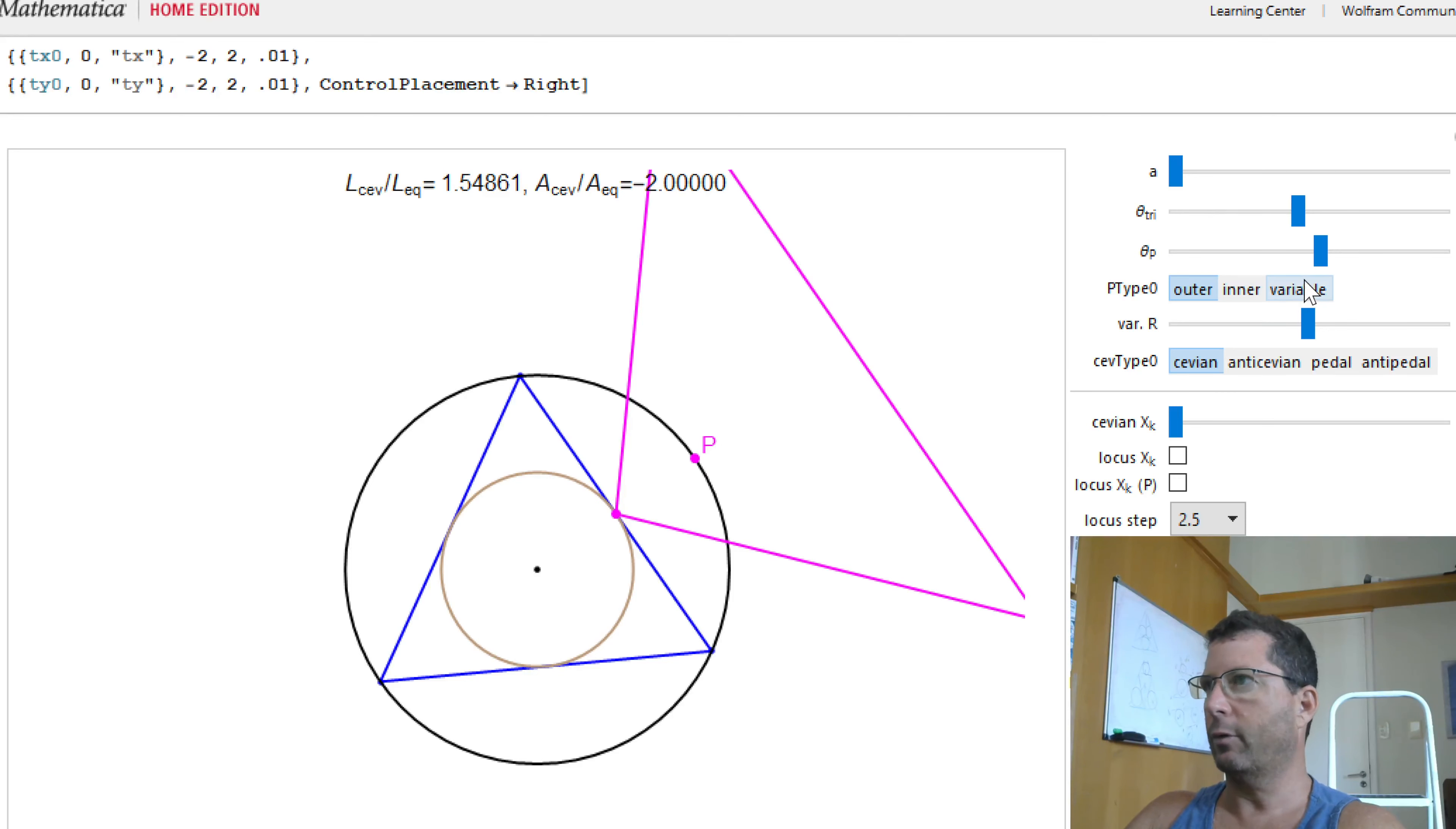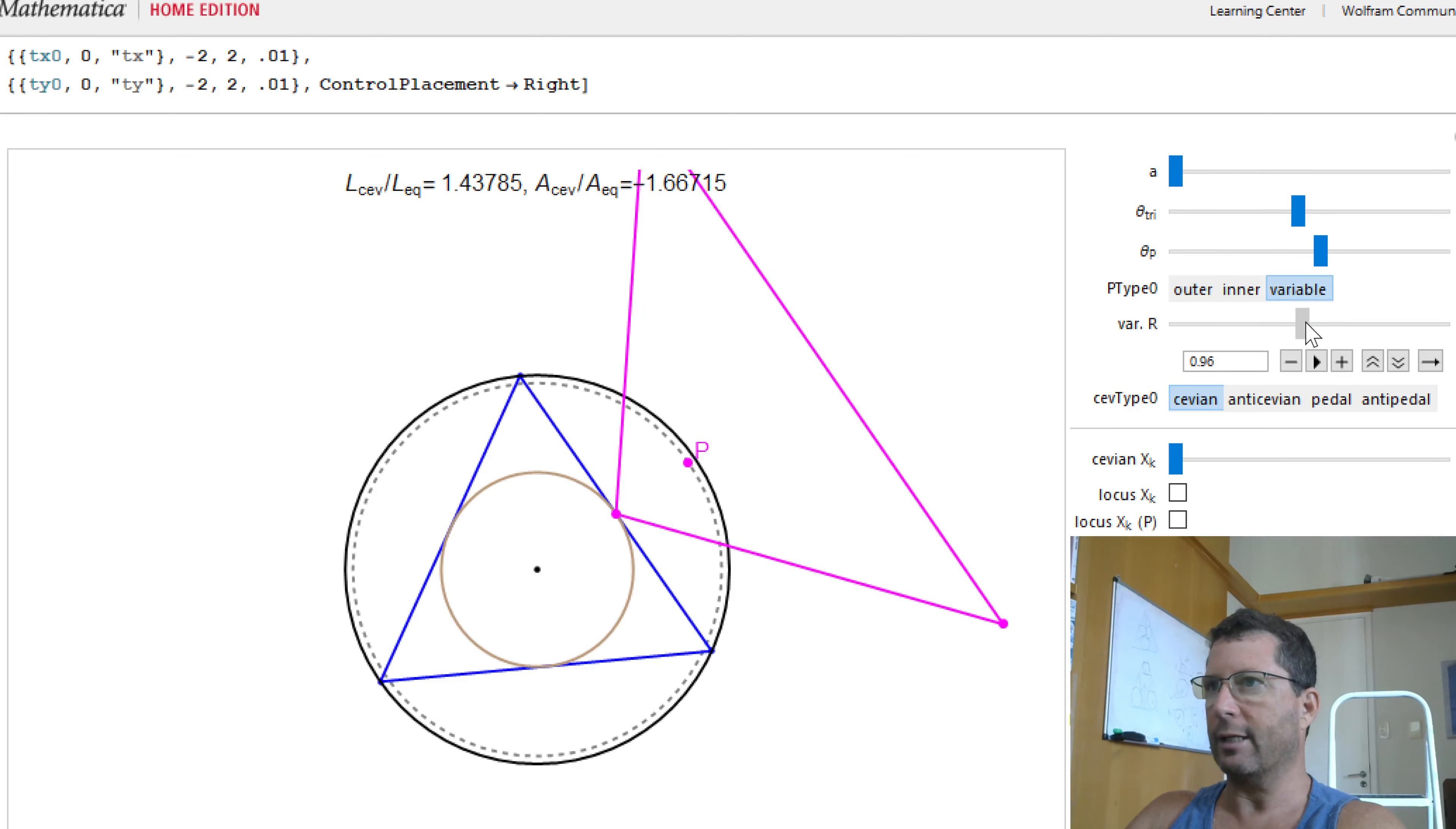I can do this in a couple of ways. Let's just illustrate what's happening as I move P inwards and I land on that inner circle, and I can even trespass it.